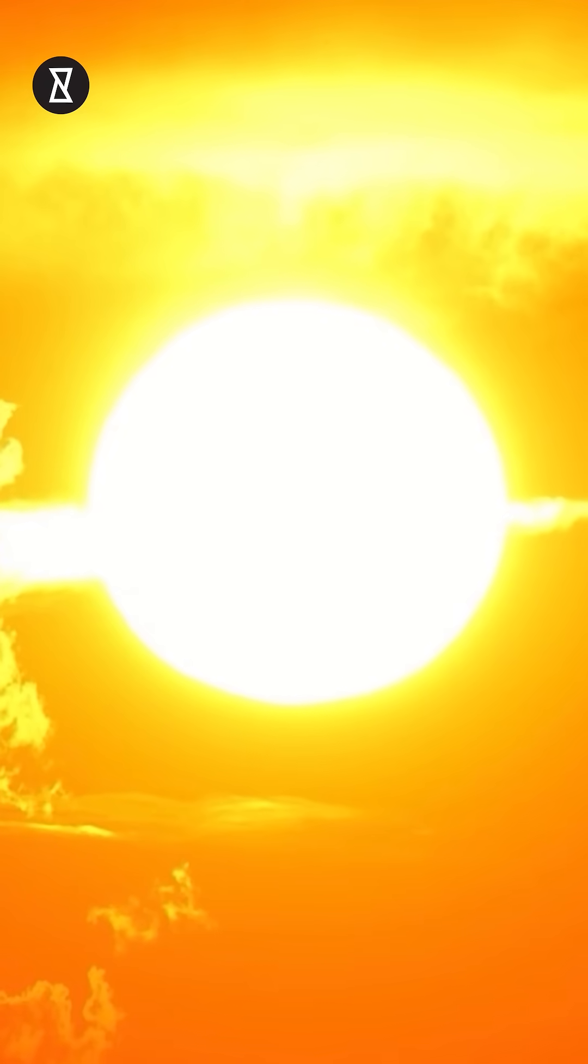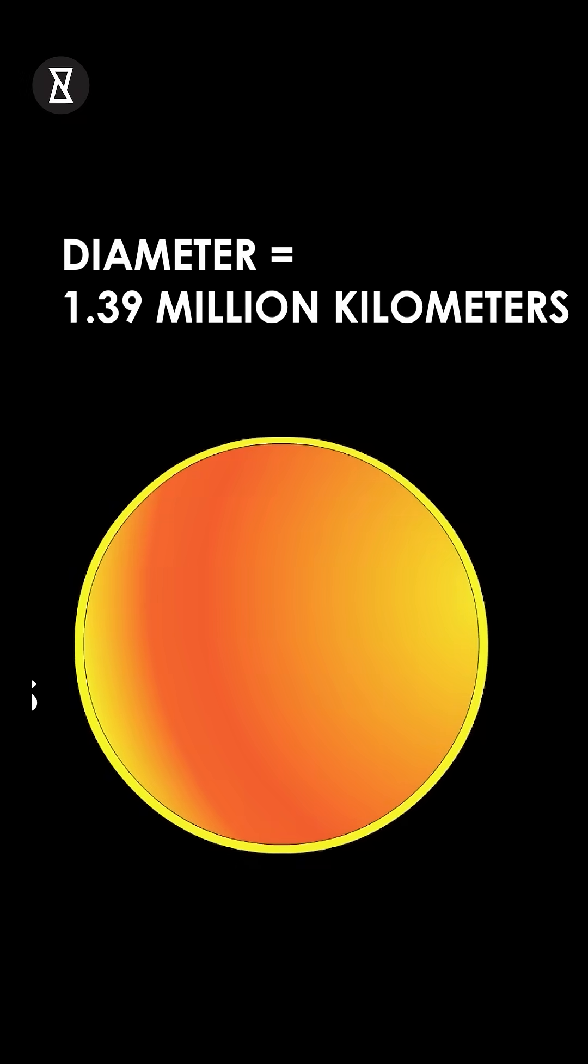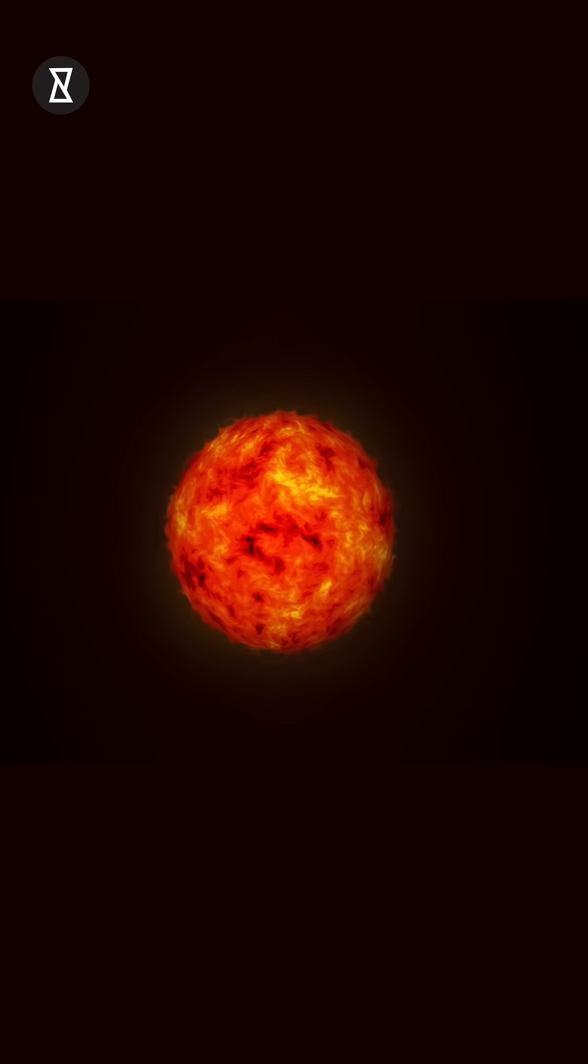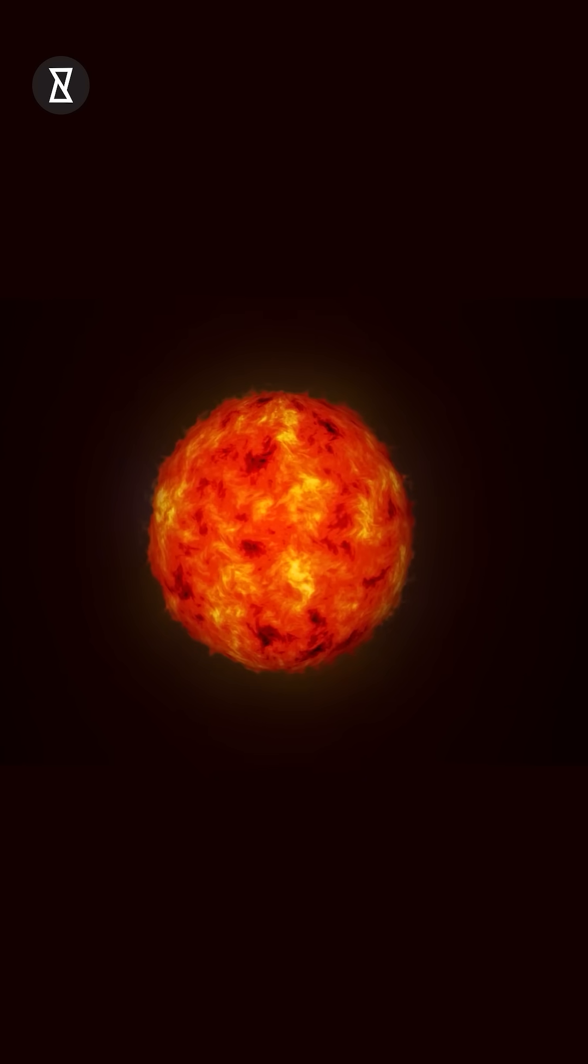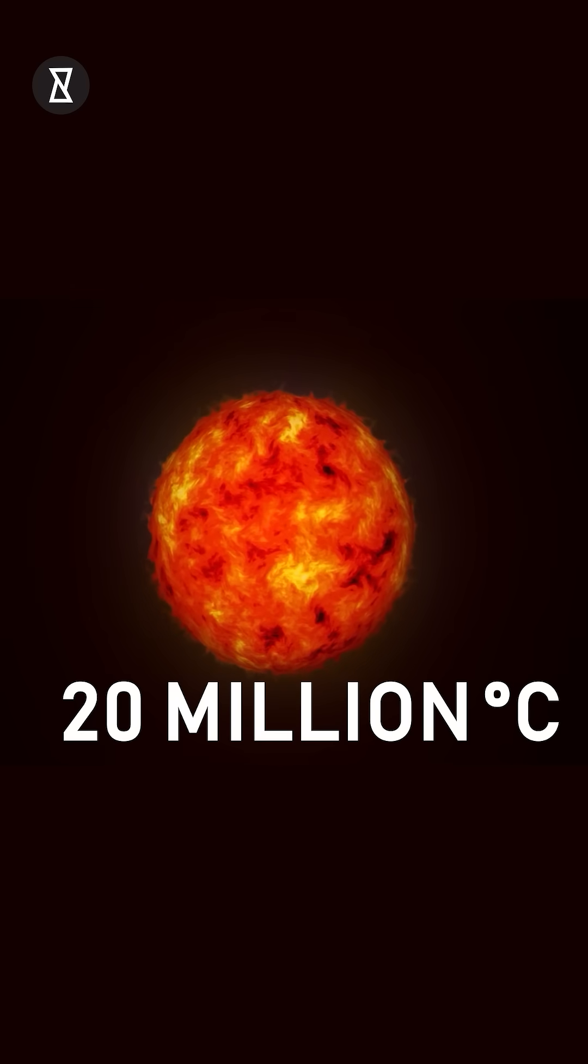The Sun is huge, heavy, and has got a diameter of 1.39 million kilometers, which is 109 times that of Earth. The corona of the Sun, its outer atmosphere, reaches a staggering 20 million degrees Celsius.